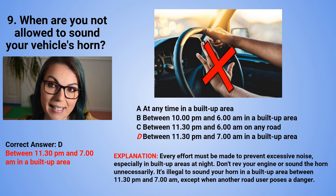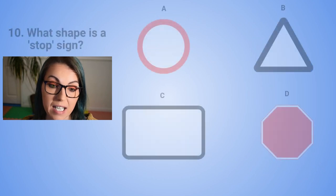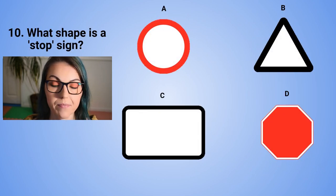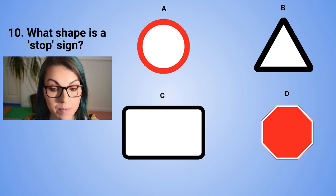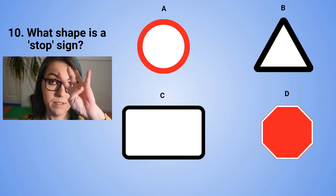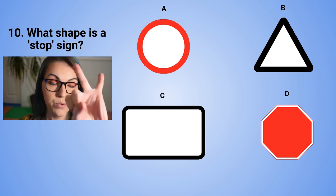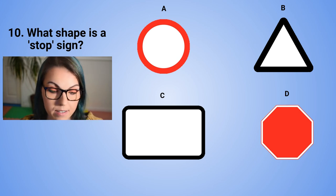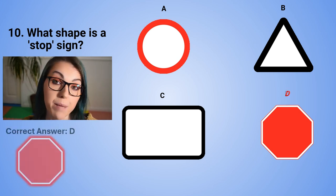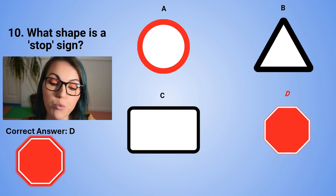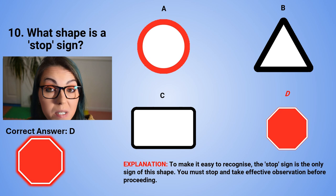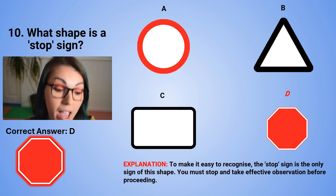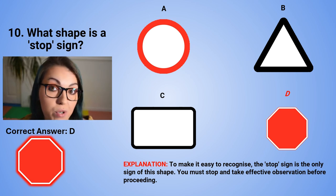Question 10: What shape is a stop sign? The correct answer is shape D — the octagonal shape. To make it easy to recognise, the stop sign is the only sign which has this shape. You must stop and take effective observation before proceeding.